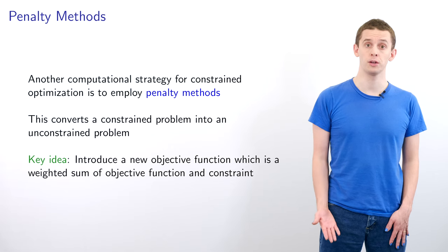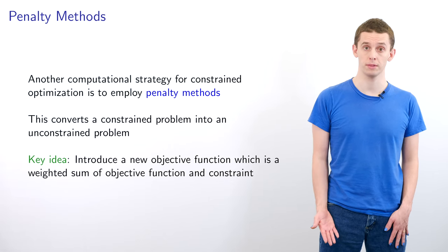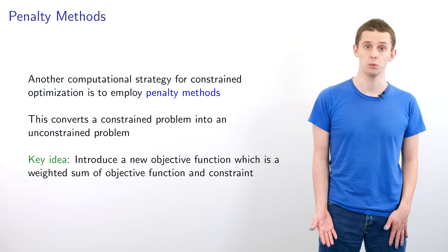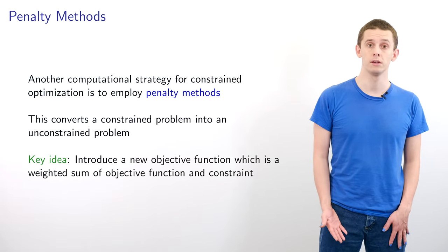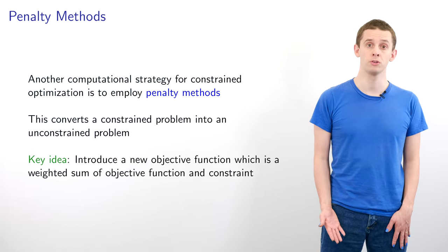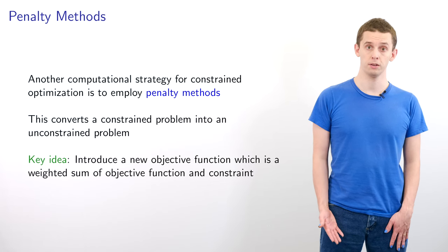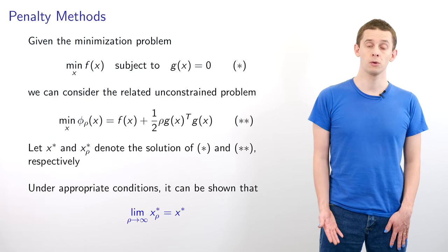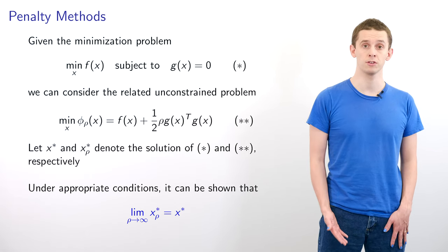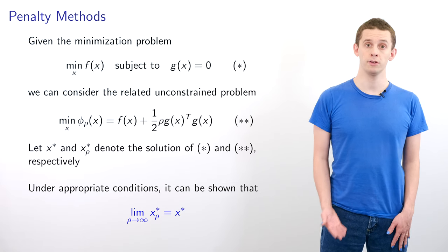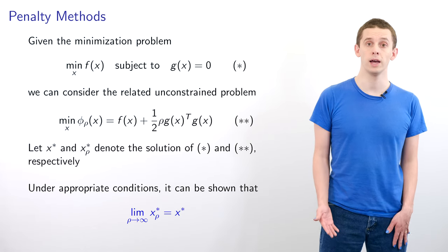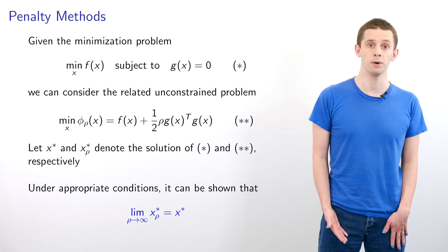Another computational strategy for constrained optimization is to employ penalty methods. This converts a constrained optimization problem into an unconstrained one. The key idea is to introduce a new objective function that's a weighted sum of our original objective function plus our constraint. Suppose we look at the minimization problem where we want to minimize f of x subject to g of x equal to zero, where f maps from R^n to R and g maps from R^n to R^m.